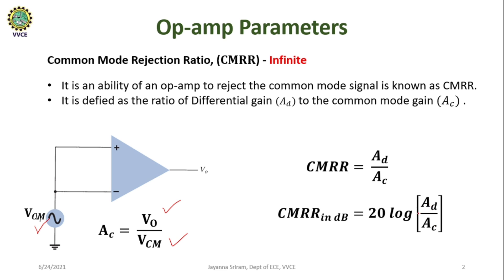For the 741 IC, CMRR is 90 dB. Now I will solve a few problems on CMRR. I am going to consider a certain op-amp with an open loop differential gain of 1 × 10⁵.